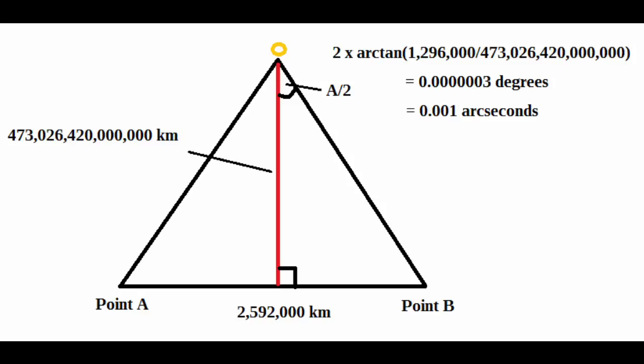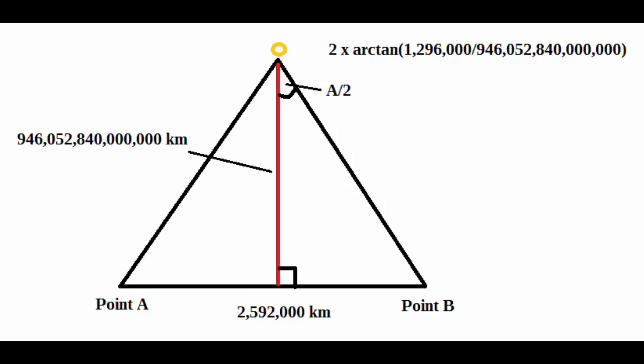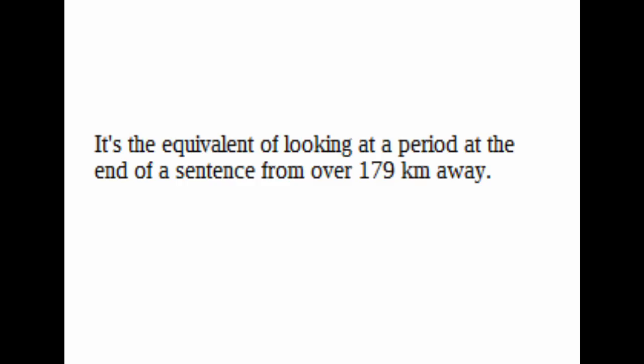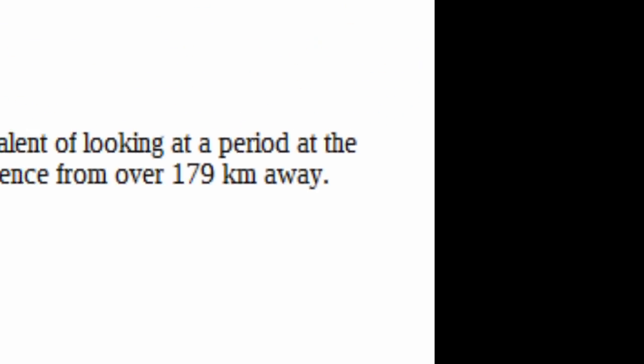For stars 100 light-years away, which would be 946 trillion 52 billion 840 million kilometres away, the angular size of the motion blur observed in a day-long exposure would be about 0.000000016 degrees, or about 0.0006 arcseconds. If that seems like a very small number, that's because it is. It's the equivalent of looking at a period at the end of a sentence from over 179 kilometres away.